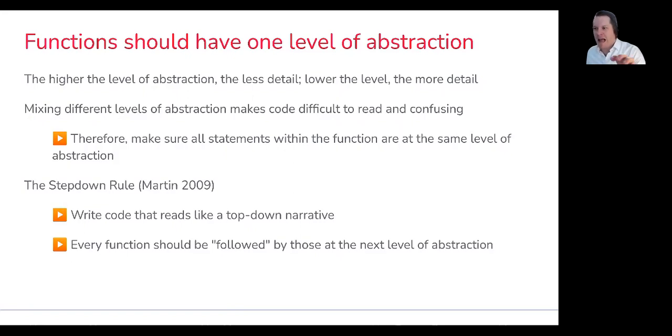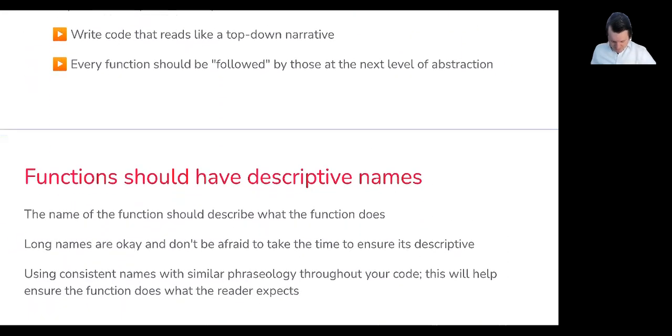And then the ignition would happen. Well, that could be another function because that process is going to be at a lower level of detail. And as you go down, you're actually getting nearer and nearer to the underlying processes that collectively make up this overarching action. So every function should be followed by those at the next level of abstraction and don't mix varying levels of abstraction within a single function.